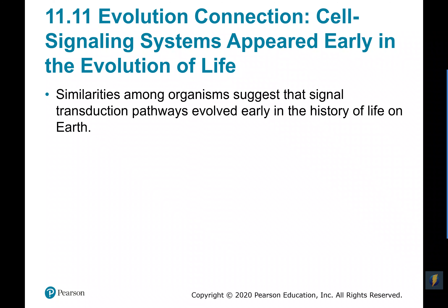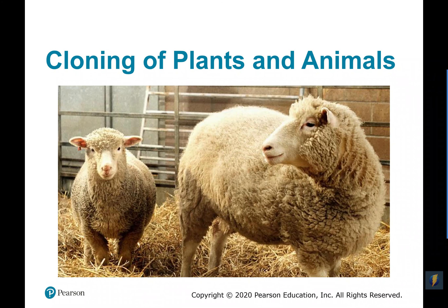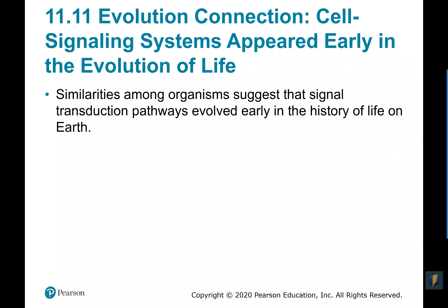The similarities among organisms in terms of what these different signal transduction pathways look like, even in very simple organisms, suggest that many of these pathways evolved very early in the history of life on Earth. We see similar transduction pathways from simple archaea and prokaryotes all the way up to complex multicellular eukaryotic organisms, suggesting that these pathways or at least precursors to them have been around for a very long time.